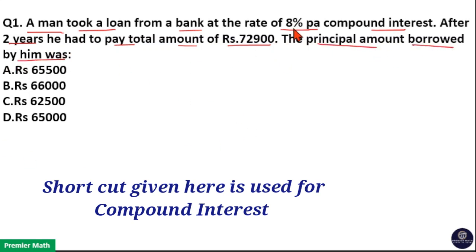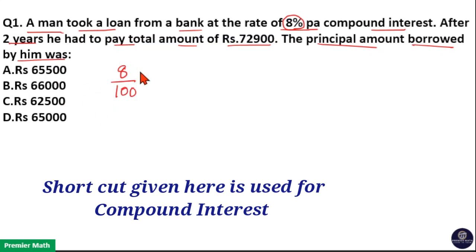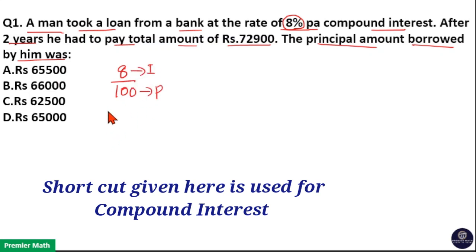Here, the interest rate is 8% per annum. What is that meaning? 8% means 8 by 100. The meaning of interest rate is: if Rs. 100 is the principal, Rs. 8 will be given as interest every year. This is the meaning of interest rate.